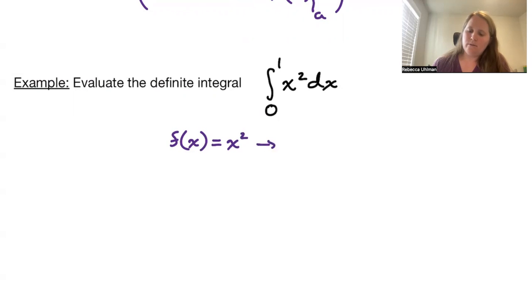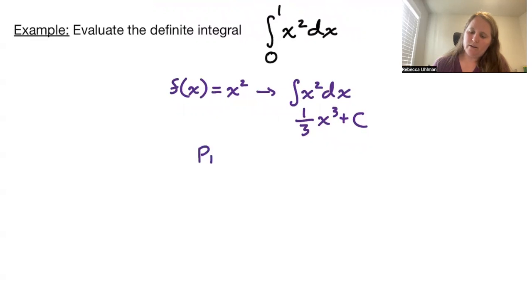We take our integral of x squared dx. That's one third x cubed plus C. So we can go ahead and pick our capital F(x) to just be one third x cubed.